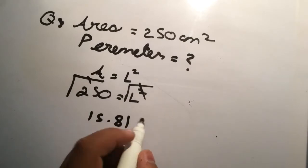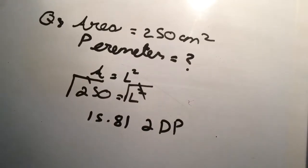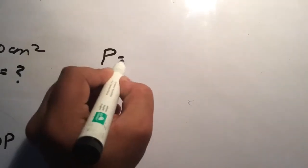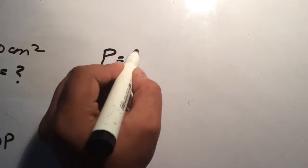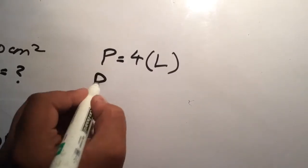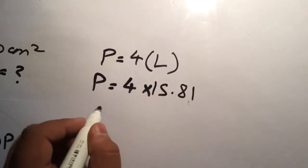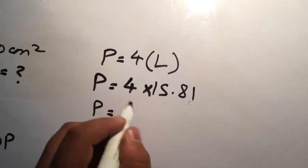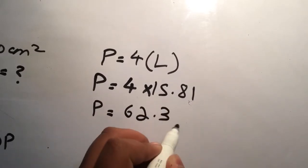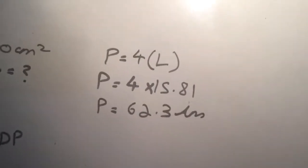Now what we have to do next is find the perimeter of it. Perimeter equals to four into length. So the perimeter will be four into 15.81, so the perimeter will be 62.3. This is the answer of question eight.